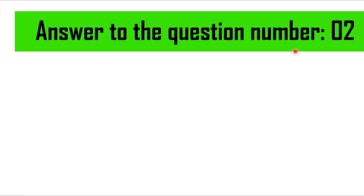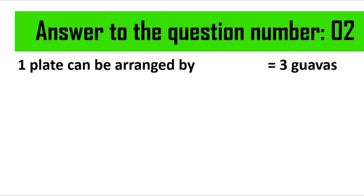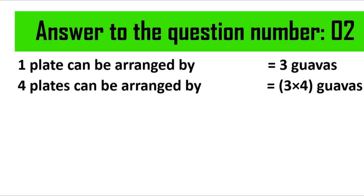This is the answer to question number two. In the first line you should write: 'One plate can be arranged with three guavas,' as it is mentioned in the question. In the next line you should write: 'Four plates can be arranged with three into four guavas.' We write three into four because we are multiplying the three guavas by the four plates. Remember, you should write brackets here so the math is clearly noticeable.